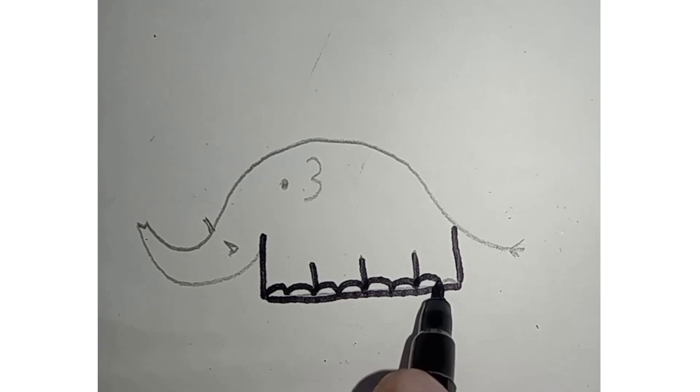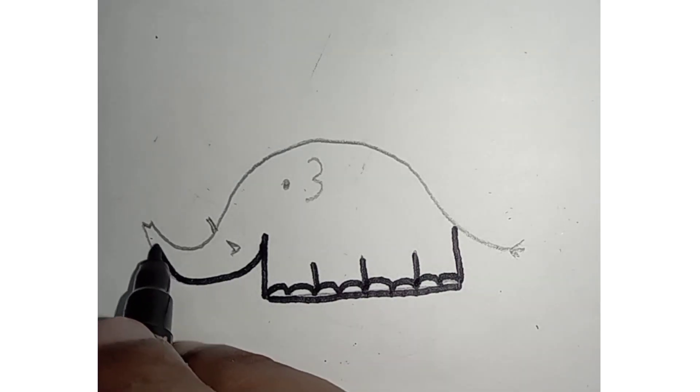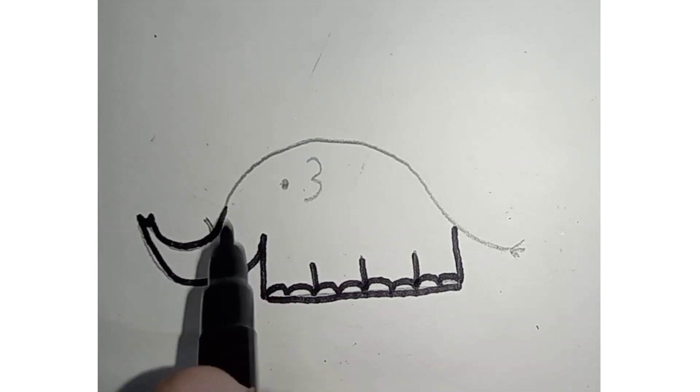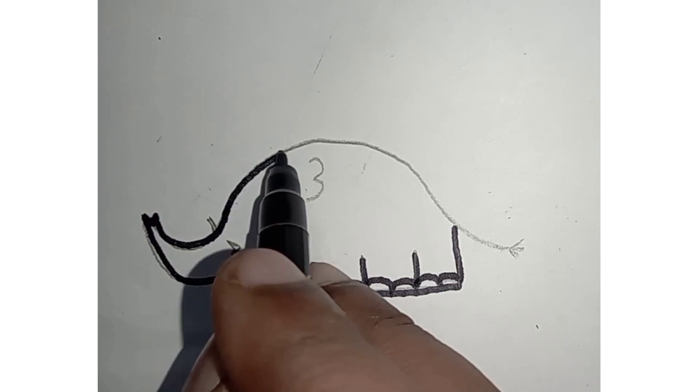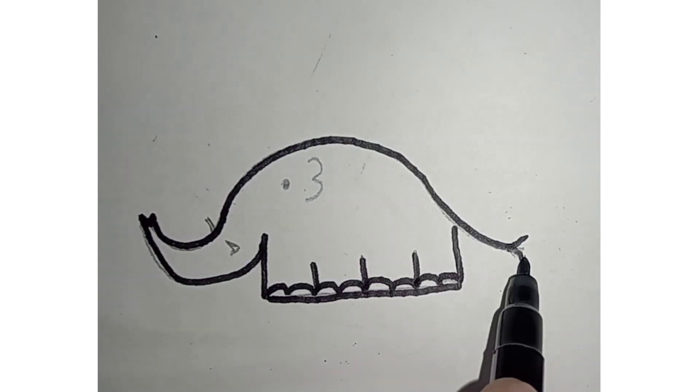If we did something wrong, we have to erase it. Right? So we have to draw with a pencil and outline it with a sketch. Yes. The black sketch pen is very nice. Right?